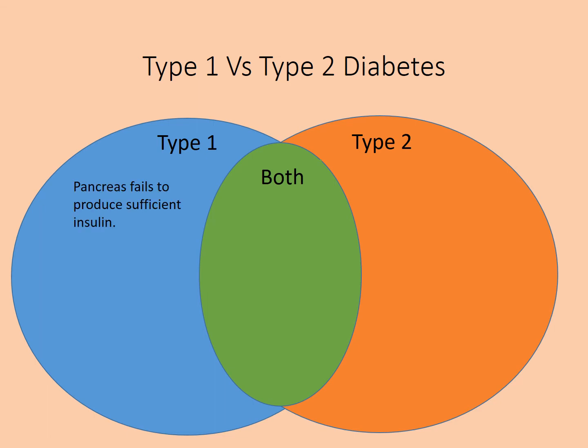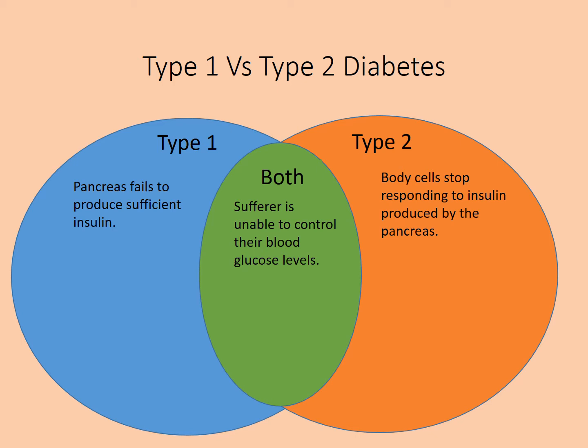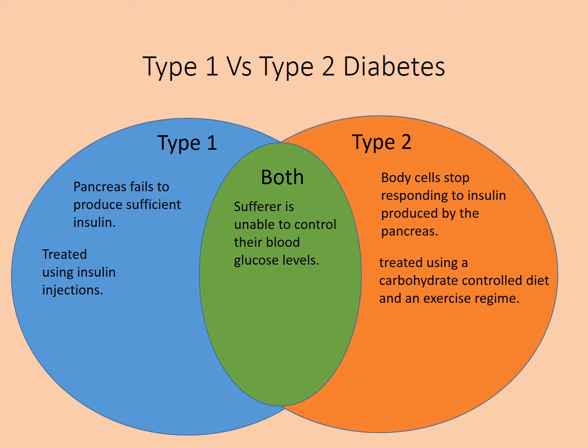In type 1, the pancreas fails to produce sufficient or no insulin. In type 2, body cells stop responding to the insulin that is produced — it is still made, but cells don't respond. Key to both: the sufferer is unable to control their blood glucose levels. Type 1 is treated with insulin injections; type 2 is treated with a carbohydrate-controlled diet and exercise regime.